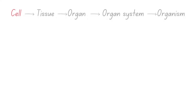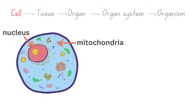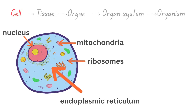It all begins with the cell, but even within a cell there's an intricate level of organization. Cells contain organelles, which are like tiny organs within the cell, each with a specific function. For example, the nucleus is the control center, housing the cell's DNA, while mitochondria are the powerhouses, generating energy for the cell's activities. Ribosomes are responsible for protein synthesis, and the endoplasmic reticulum helps in the production and transport of proteins and lipids.